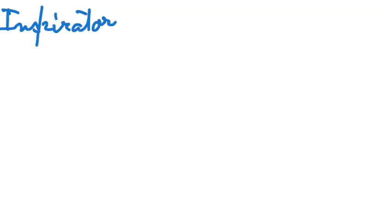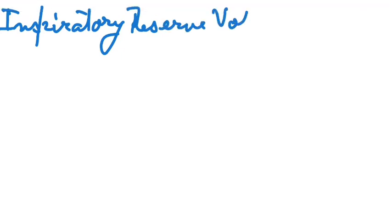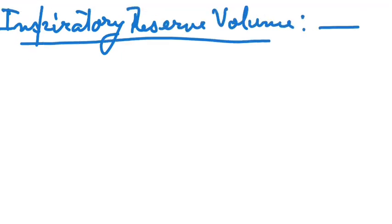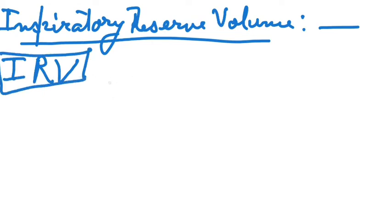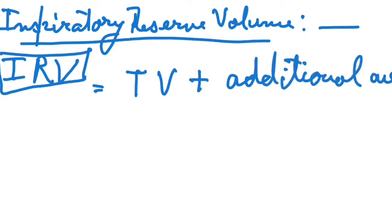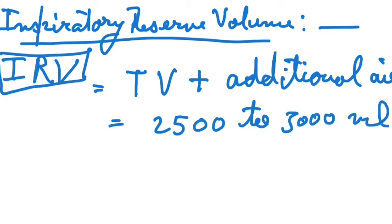Next we have inspiratory reserve volume (IRV). It is the additional volume of air a person can inspire by a forceful inspiration — that means effort is required to inspire more air. On average, a healthy human can inspire 2500 to 3000 ml of air including the tidal volume.